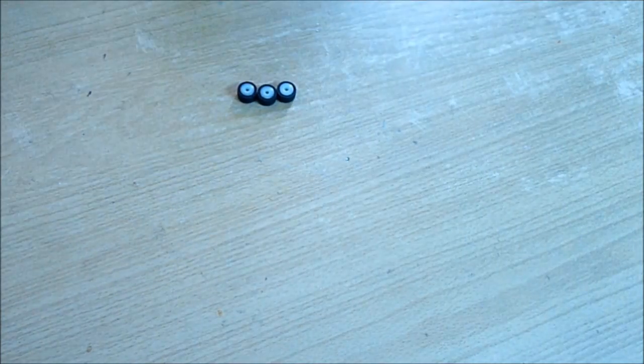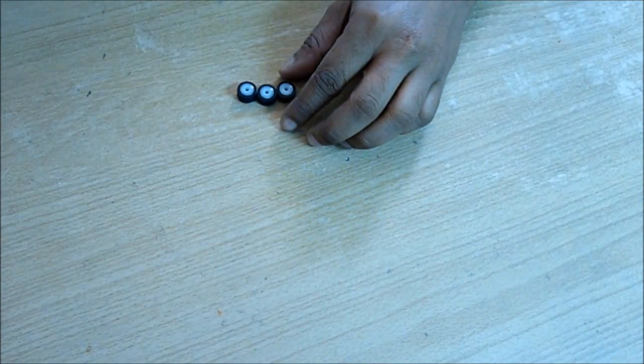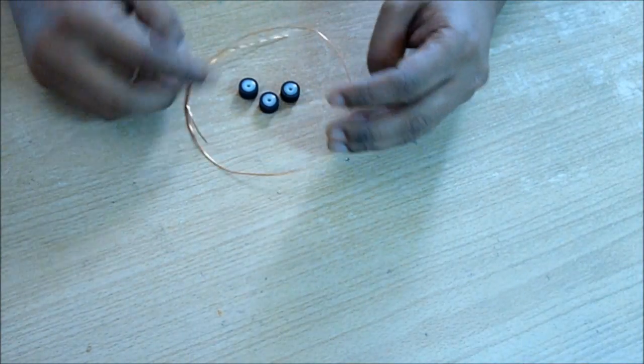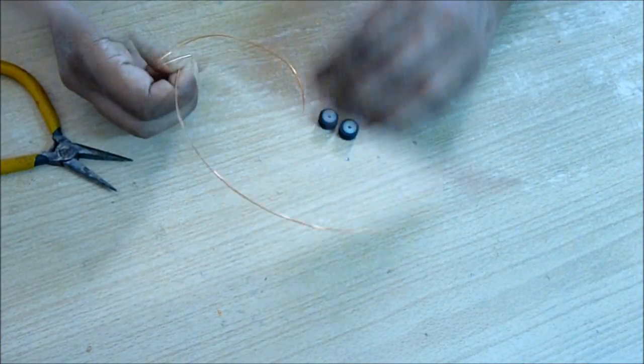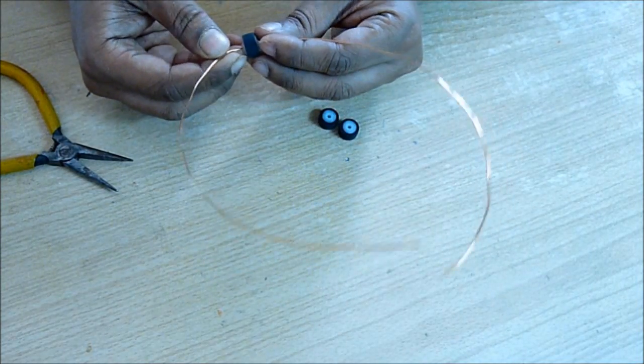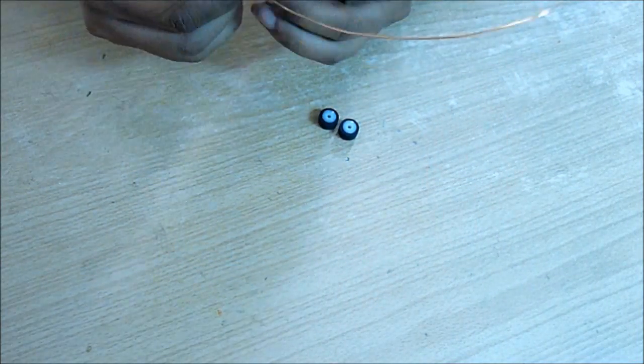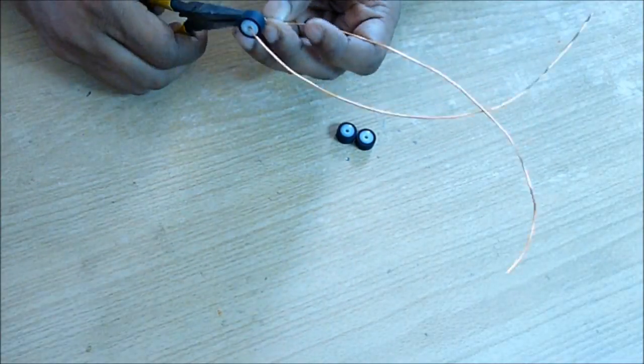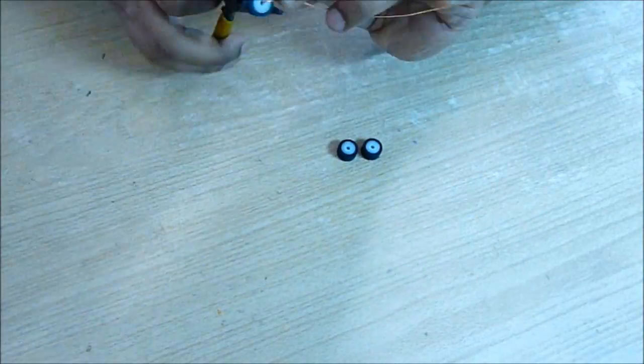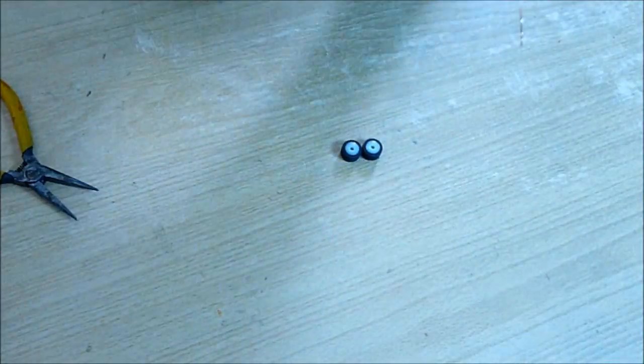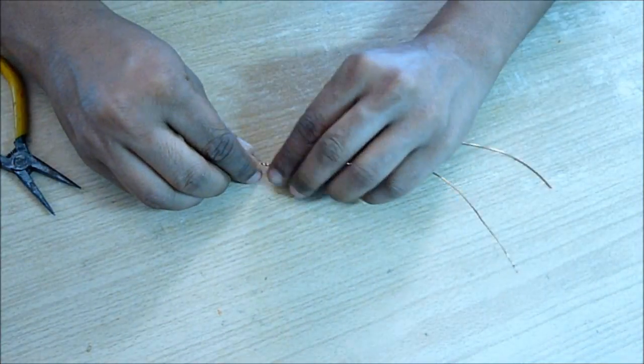For this you need three small wheels like this. You also need a copper or aluminium wire, one foot long. Take the first wheel at the middle, bend 90 degrees using a nose plier and then twist the wire. Thus we made the front wheel.